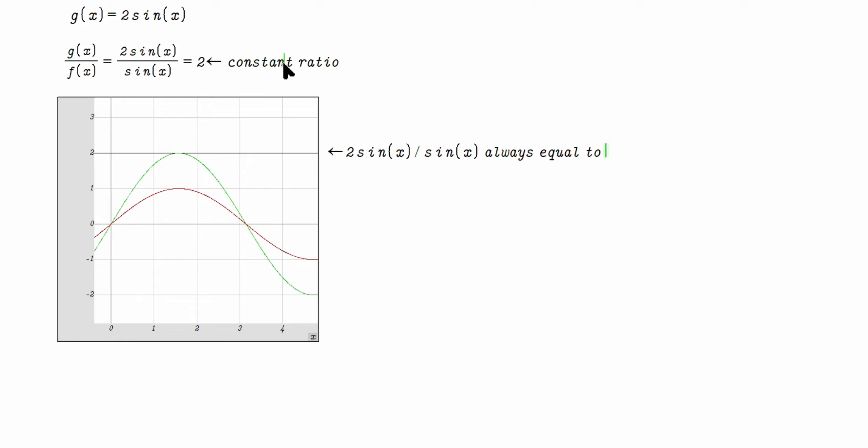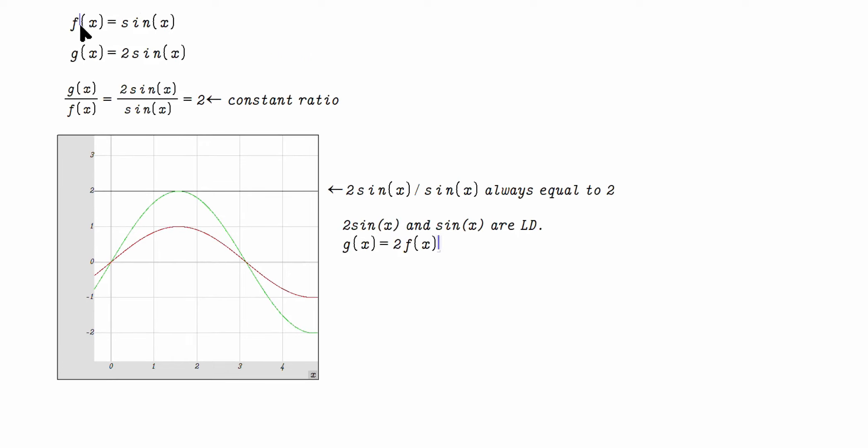For that reason, you can say that 2 sine x and sine x are linearly dependent. The other way to think about it is that basically in this case, g of x is just 2 times sine x, which is then just really f of x in the first place. This is 2, a constant between them. It's not another function, a variable, like x or whatever, or x squared. It's just 2, a constant value.